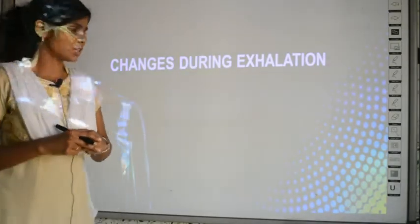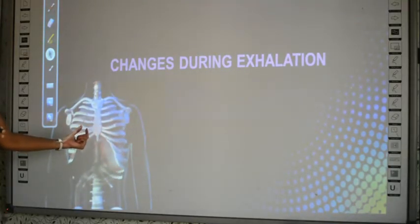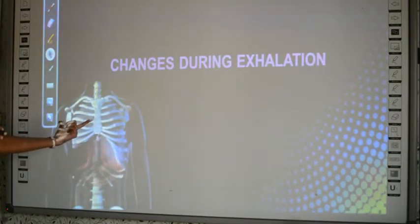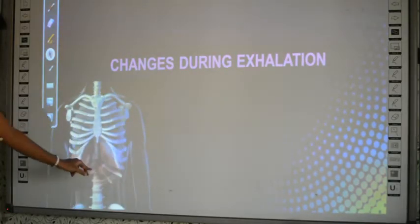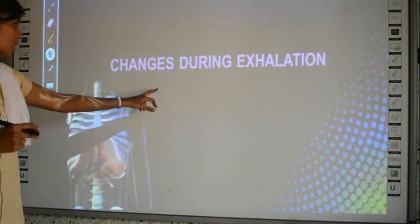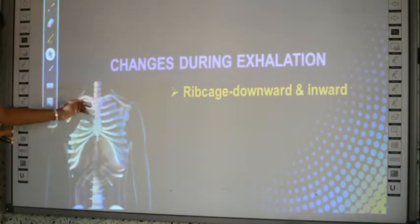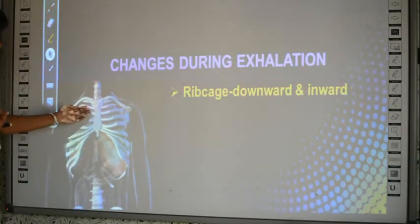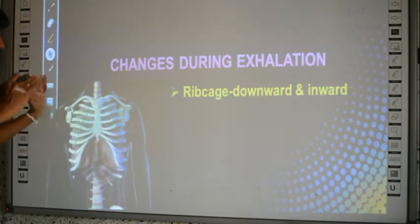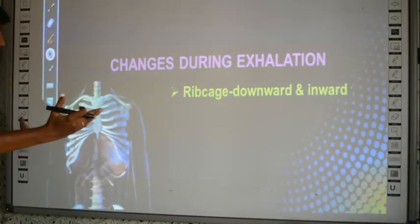Now let's learn the changes during exhalation. The same animation shows both stages — when the rib cage goes up it is inhalation, when it comes down it is exhalation. The first change during exhalation is that the rib cage moves downwards and inwards — the opposite of inhalation, where it was upwards and outwards.